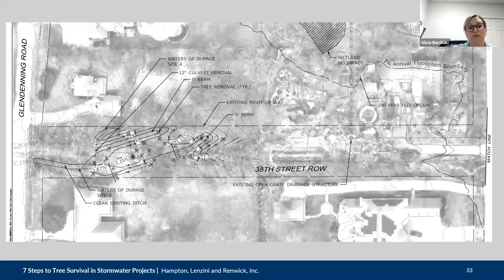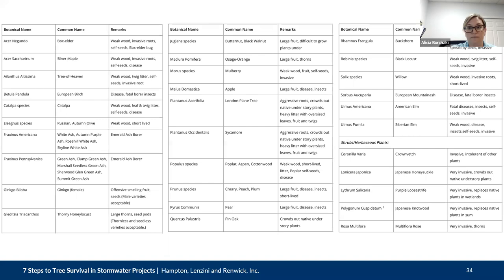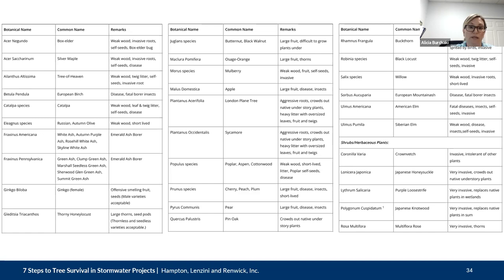This is also from the DuPage County building code — a list of prohibited plants. While purple loosestrife and invasive forbs are fairly common on prohibited lists, it's less common to see trees and shrubs listed. Keep this in mind for your projects and avoid selecting these species. For example, buckthorn is something many of us already know is an issue, and sycamore is on the list because it has aggressive roots that crowd out native understory plants and produces heavy litter with oversized leaves, fruits, and twigs. Keep an eye out for local ordinances and rules.